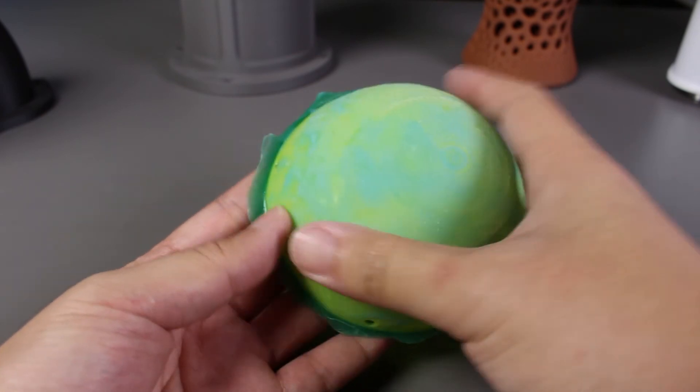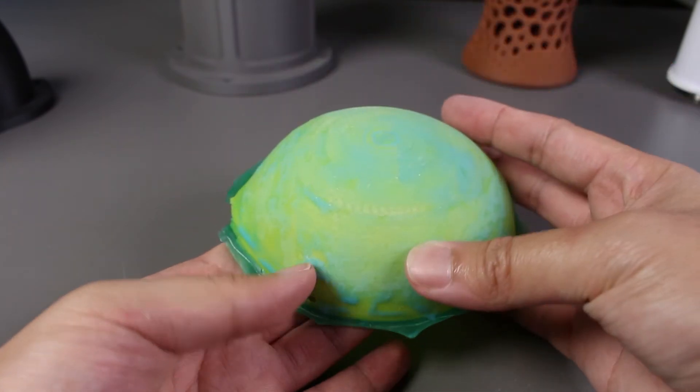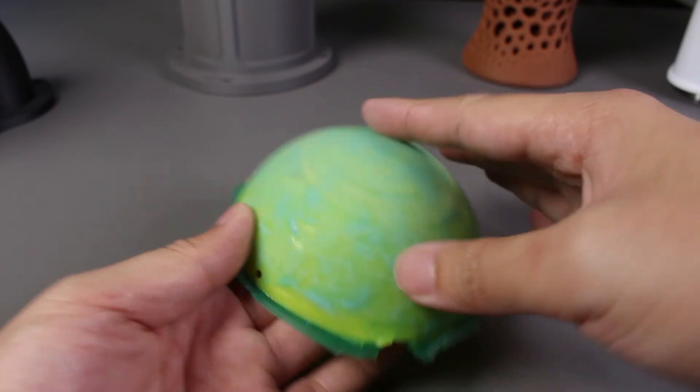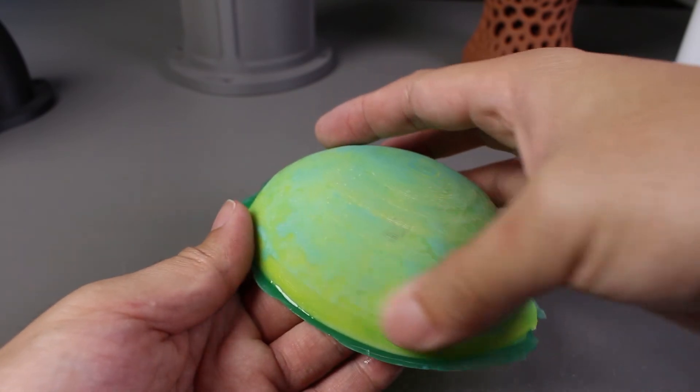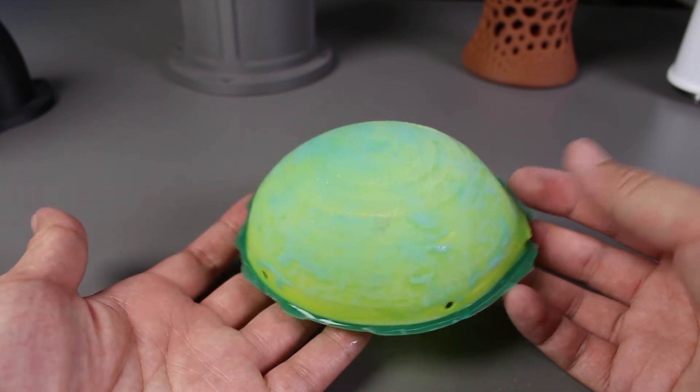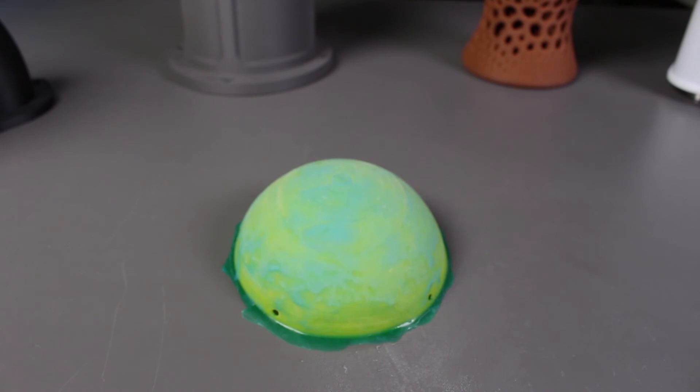You just have to watch to not over-sand it or you might get down to the PLA like what I did here. Other than that, the print is actually really smooth. Once you hit the PLA, it'll look kind of goopy and that's because when you're sanding PLA, it gets too warm and the plastic starts to melt. Other than that to watch out, I think we did a pretty good job.